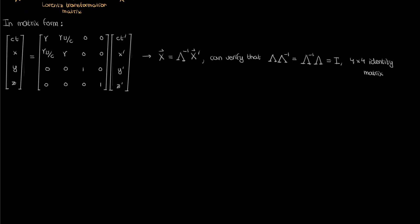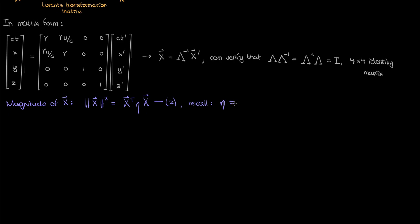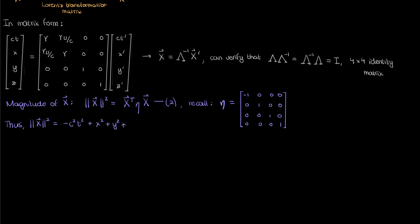Let's go over another property of the displacement four vector: its magnitude. From my video introducing the Minkowski metric, you know that the magnitude squared of the displacement four vector — which basically gives you the spacetime distance between two events — can be found by taking the transpose of the displacement four vector, multiplying by the Minkowski metric, and then multiplying by the regular displacement four vector as a column vector. I'll call this equation 2. Recall that the Minkowski metric eta is represented by a 4x4 diagonal matrix, in which the first element is negative 1 and the other diagonal elements are positive 1, by our established convention. The complete expression for the magnitude squared of my displacement four vector in terms of t, x, y, and z is this.